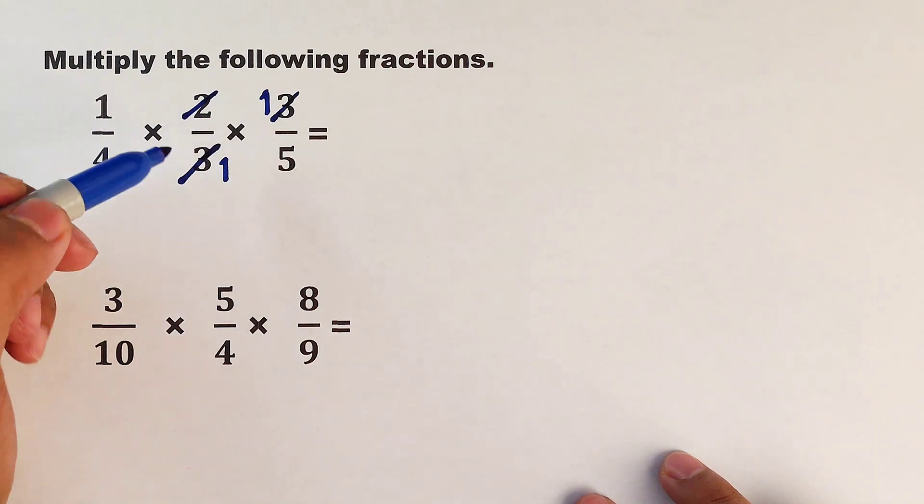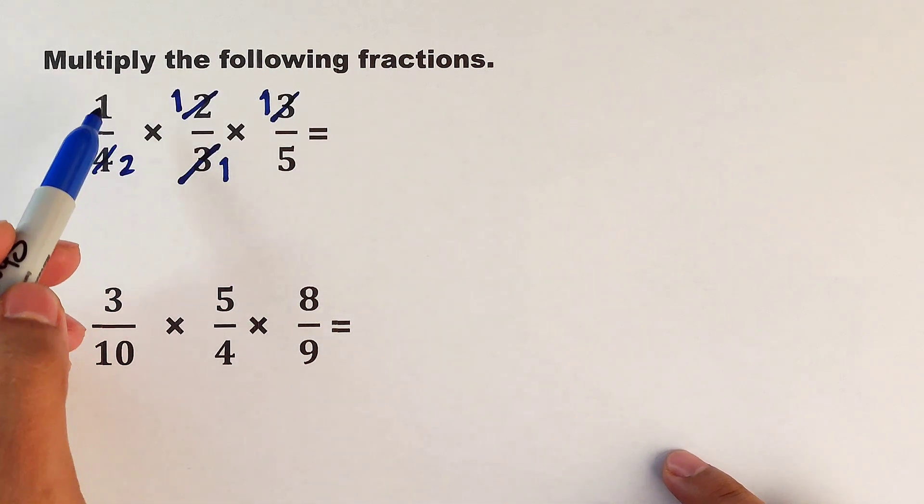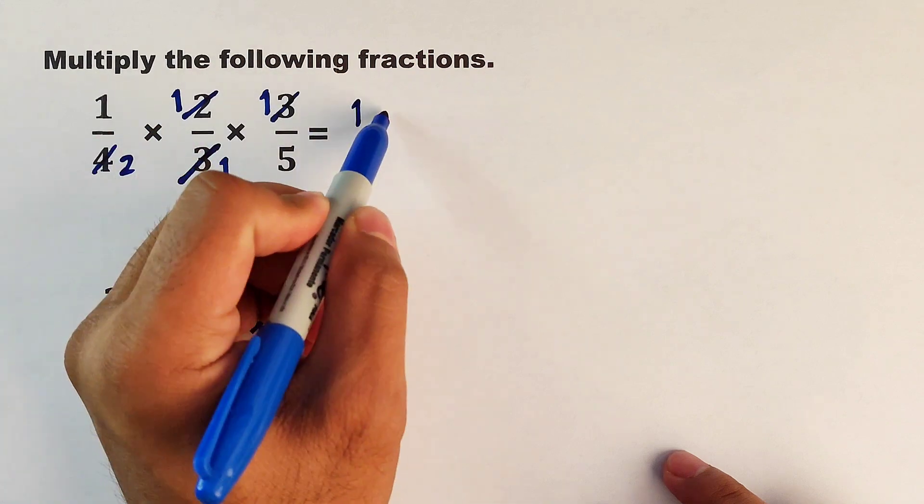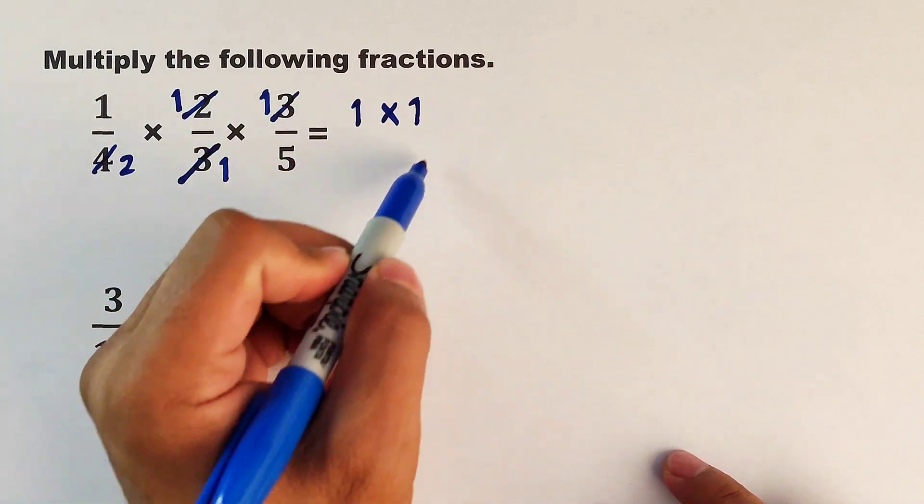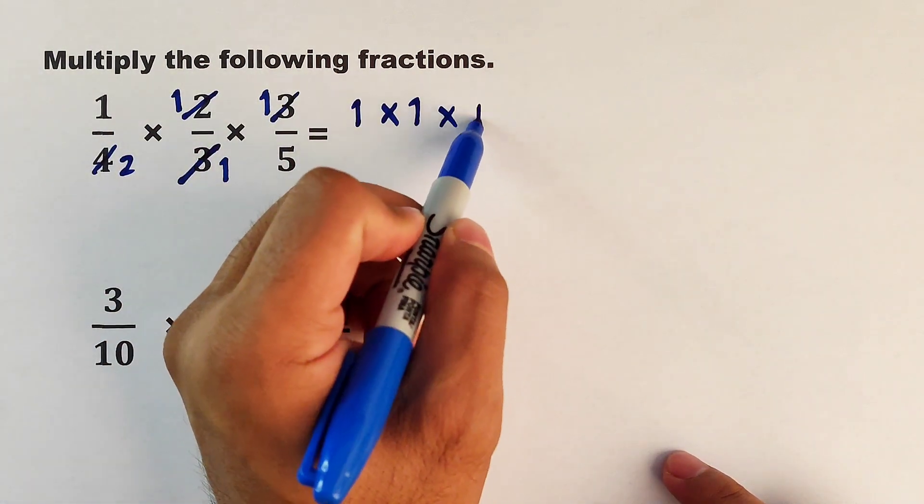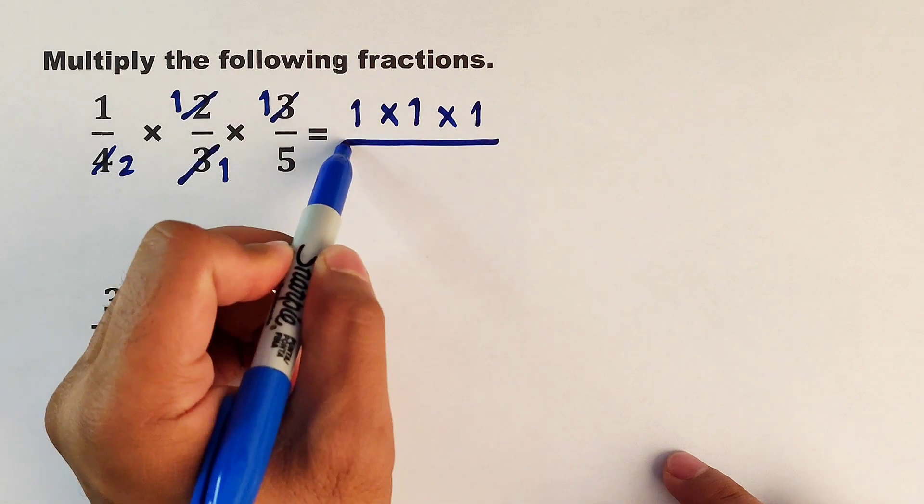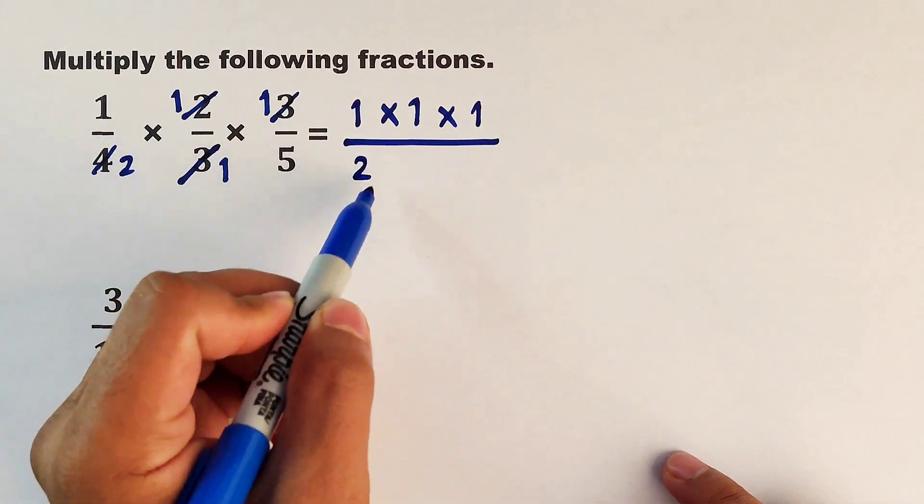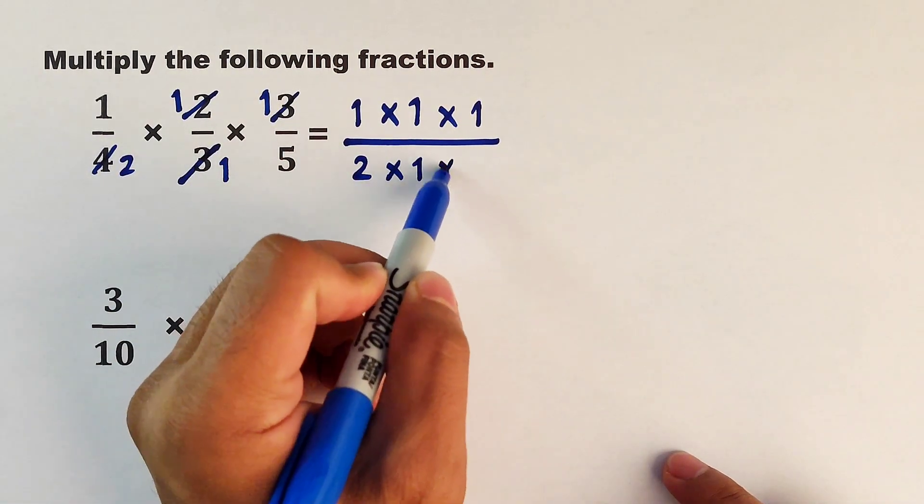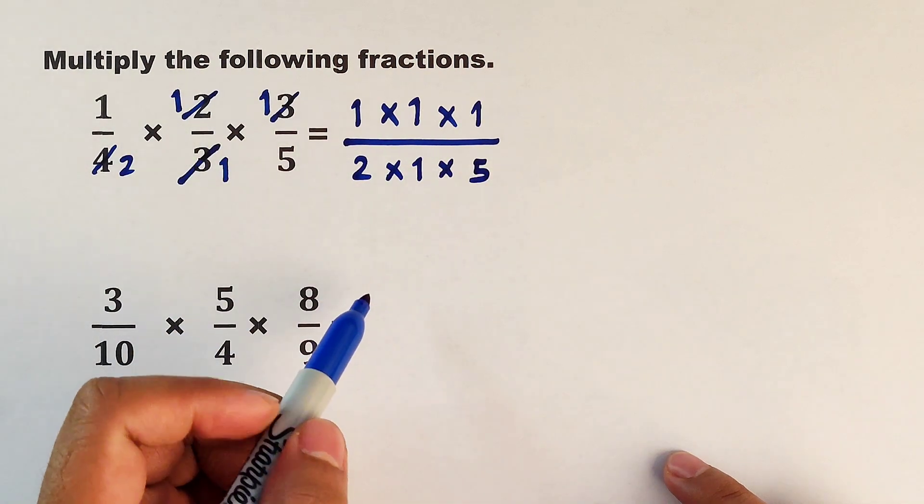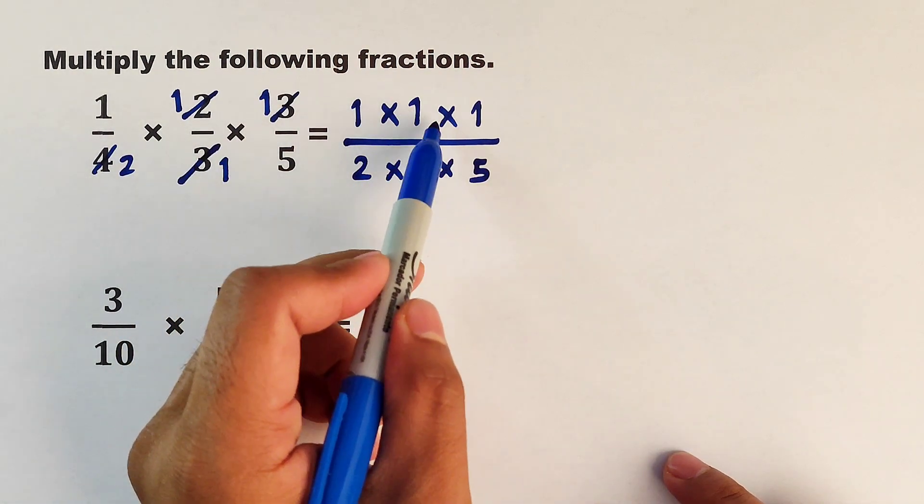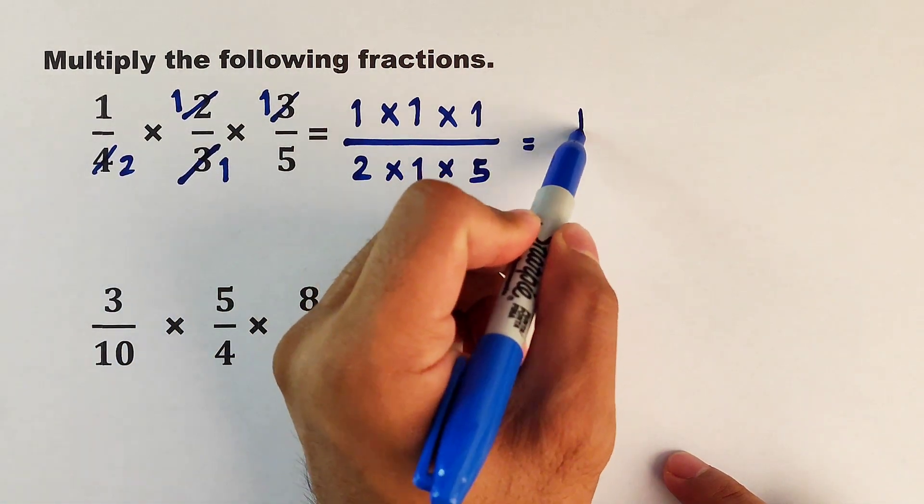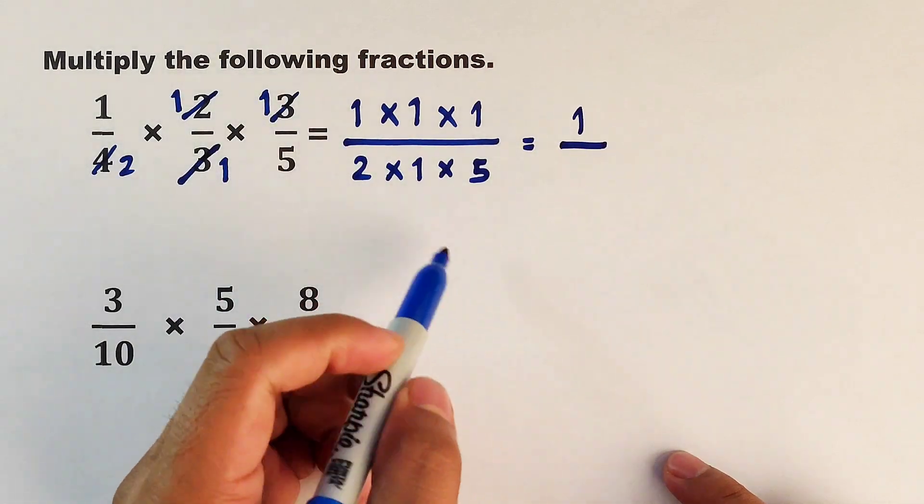And in this case, we still have 1 times 1 times 1 in the numerator over 2 times 1 times 5. So we have 1 times 1 times 1, that is equal to 1, over 2 times 1 times 5, that is equal to 10.